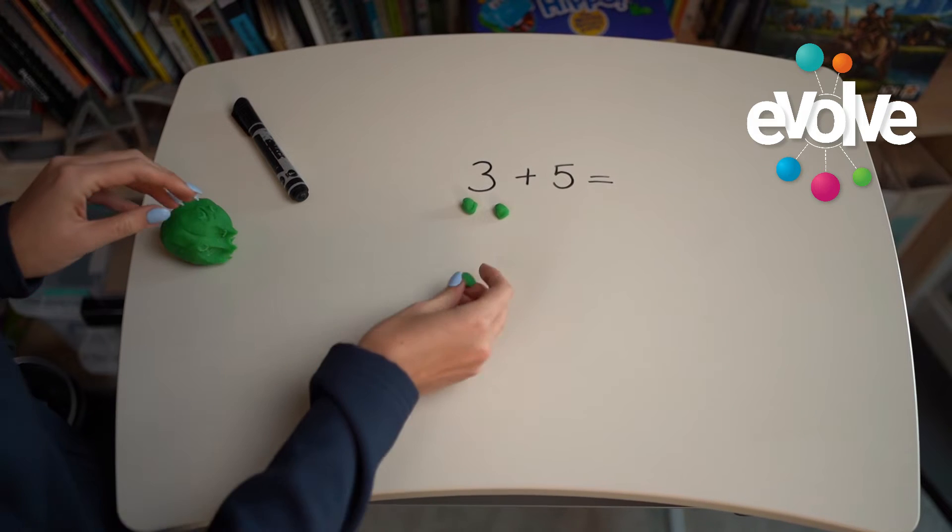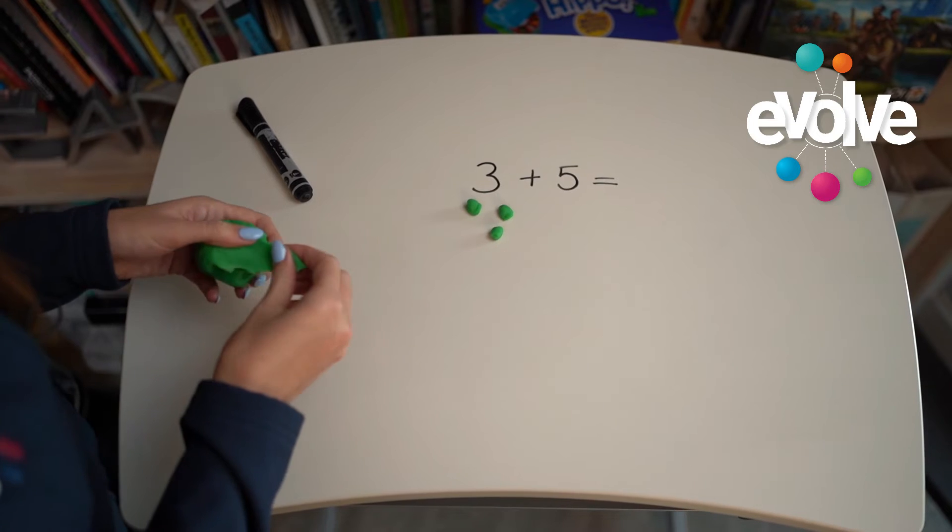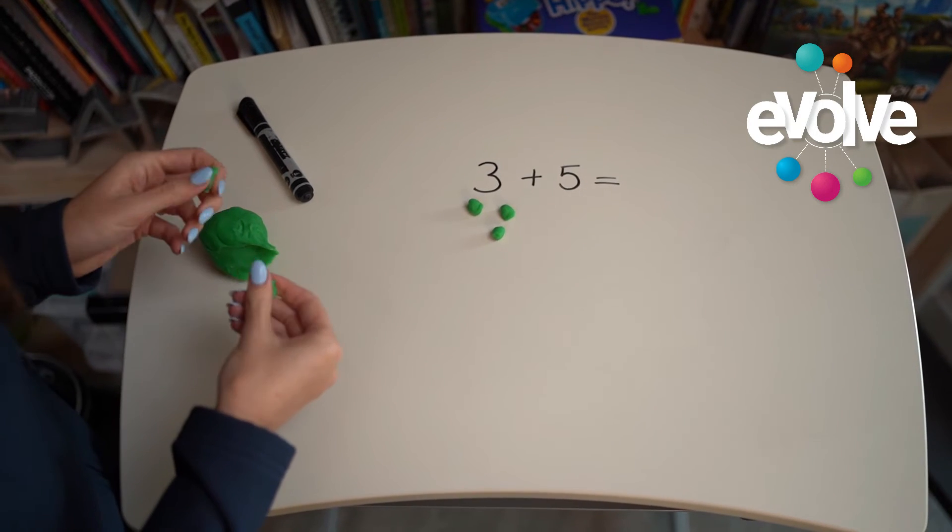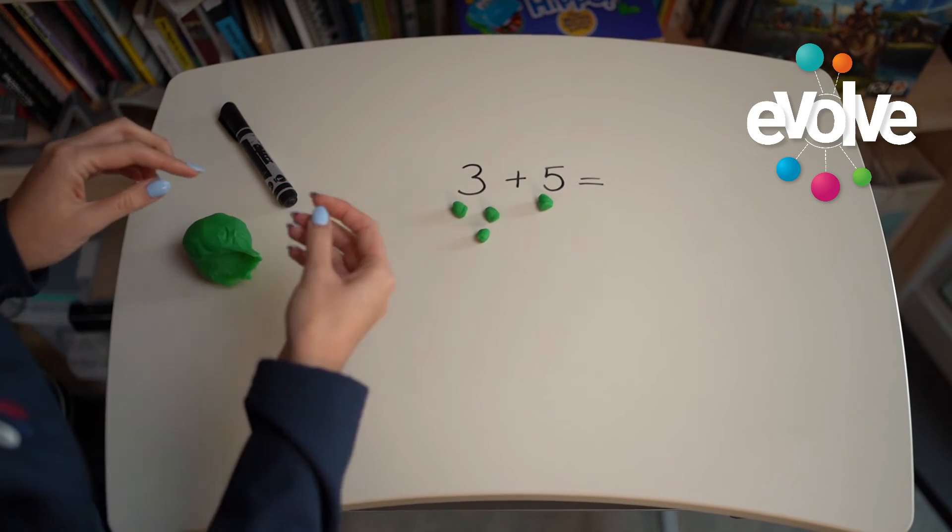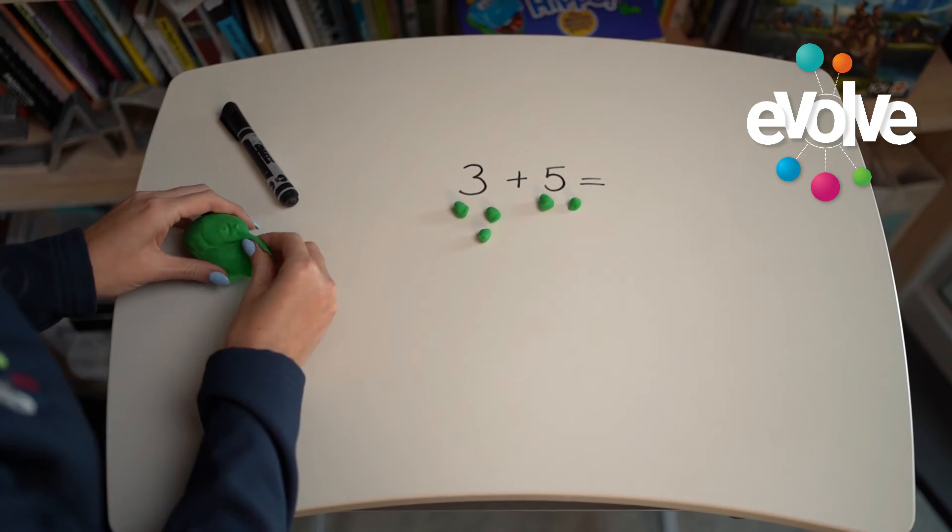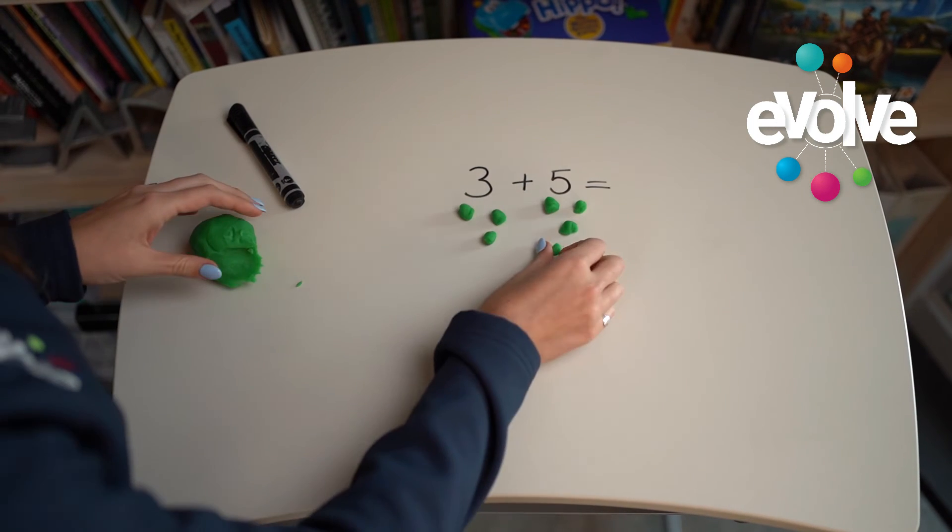The plus tells us that we're going to add some more, so we're going to add five more balls of play-doh. One, two, three, four, five.